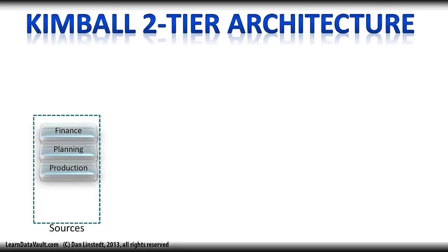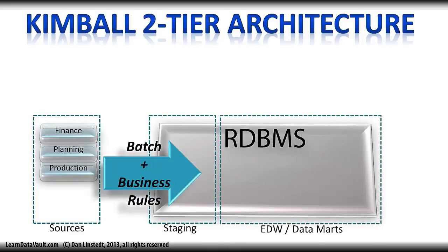Let's start with the Kimball two-tier architecture. We've got the sources on the left — the batch and the business rules in the middle, the staging area, followed by the data warehouse. Kimball defines the data warehouse as a conglomeration of conformed dimensions and conformed facts, and that brings a lot of questions to the table. Do I need a persistent staging area for raw history? What if I need conformed staging tables? Do I conform data on the way into the stage or on the way into the data marts or dimensional models that make up the warehouse?